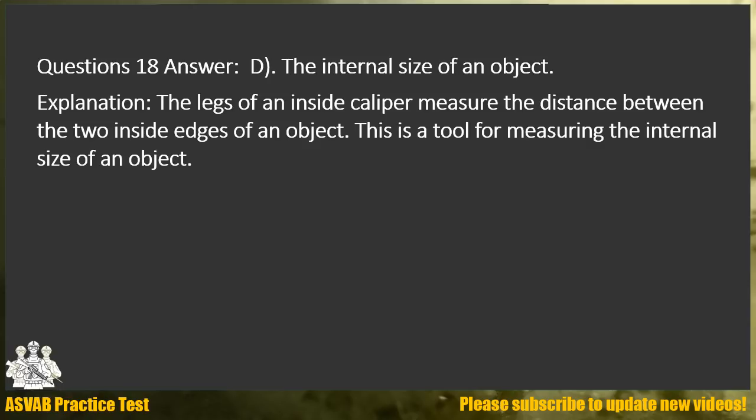Answer D. The internal size of an object. Explanation: The legs of an inside caliper measure the distance between the two inside edges of an object. This is a tool for measuring the internal size of an object.